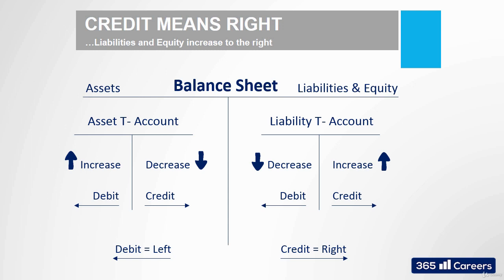I know it can be a little confusing, but you only need to remember two things. First, debits are on the left and credits are on the right — don't think of debits and credits in any other way. Second, assets stand on the left side and their increase is registered on the left side of a T-account, while liabilities and equity are on the right side of a balance sheet and increase to the right. Given that in the last two lessons we saw several new concepts such as general ledger, T-accounts, and debits and credits, I suggest that you rewind the videos if you feel there are some concepts you're uncertain about.